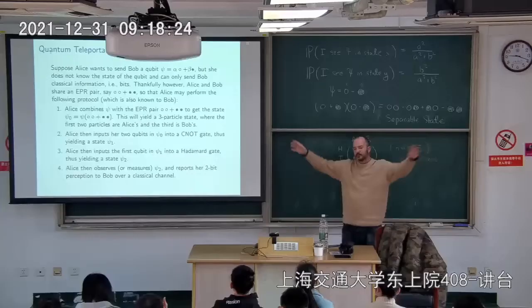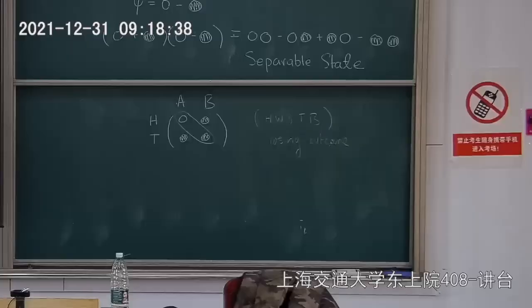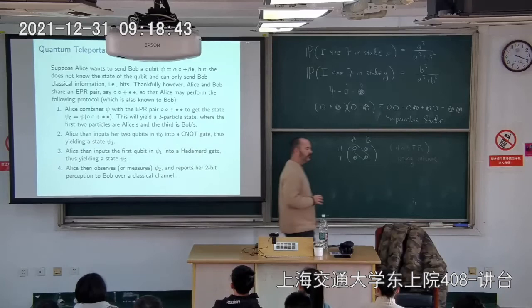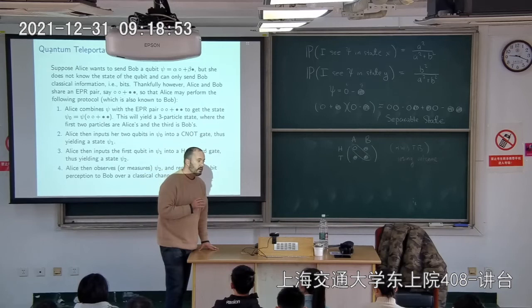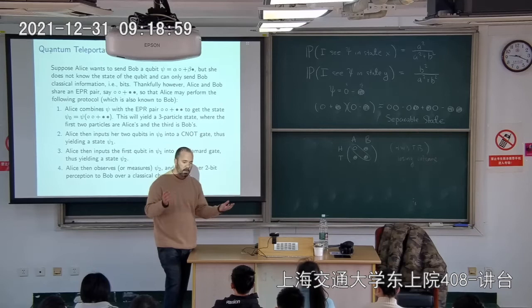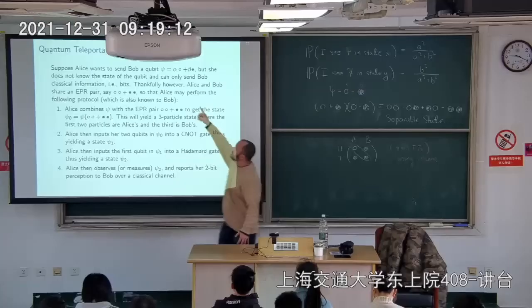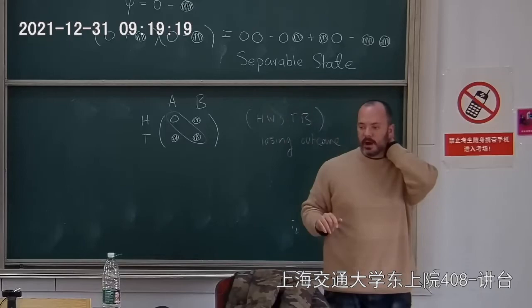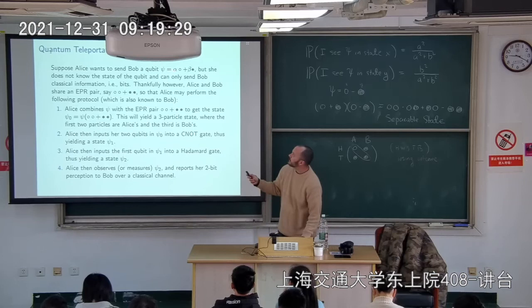Before they were separated, Alice and Bob prepare an EPR pair: white-white + black-black. Bob keeps his particle isolated, and Alice keeps hers isolated. They can communicate through a classical channel. Alice wants to send Bob an arbitrary qubit psi = alpha·white + beta·black. Alice doesn't know what the quantum state is, but she has to send it to Bob using only classical information.